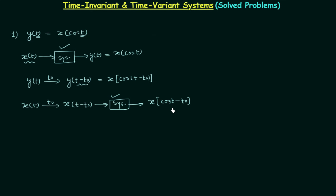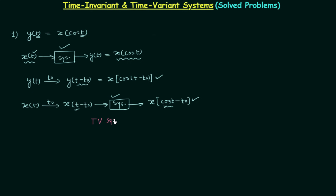In the original system the input was x(t) and the output was x·cos(t), so the system replaced t with cos(t). When the delayed input is fed, the system again multiplies cos(t) — note that t0 is a constant, not the variable t. Comparing the two outputs, they are not the same. This means after providing the delay there is variation in the system output, so the system is a time variant system.